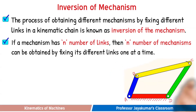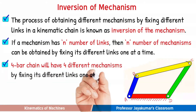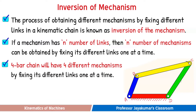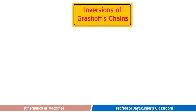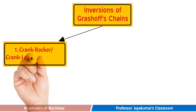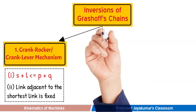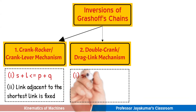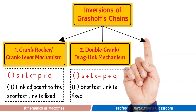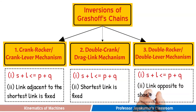For example, the four bar kinematic chain having four links can produce four different mechanisms by fixing its different links one at a time. Now let us present the inversions of Grashof's chain. Grashof's chain satisfies the condition S plus L is less than or equal to P plus Q. Depending upon which link acts as the frame, we will have three inversions of Grashof's chains: crank rocker, also known as crank lever mechanism; double crank, also known as drag link mechanism; and double rocker, also known as double lever mechanism.